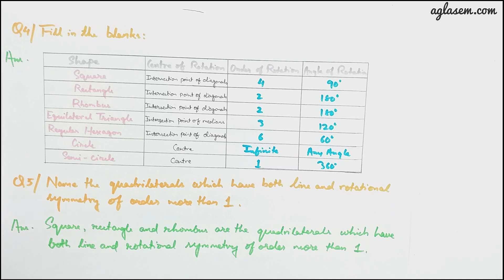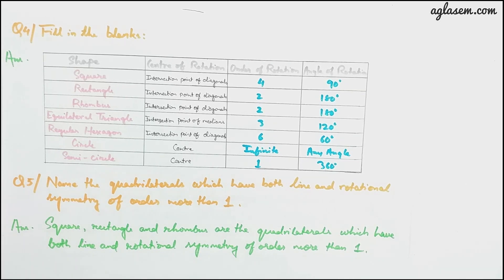Question 5: name the quadrilaterals which have both line and rotational symmetry of order more than one. The answers are square, rectangle, and rhombus. A square has four lines of symmetry and rotational symmetry of order 4. A rectangle has two lines of symmetry and rotational symmetry of order 2. A rhombus has two lines of symmetry and rotational symmetry of order 2.